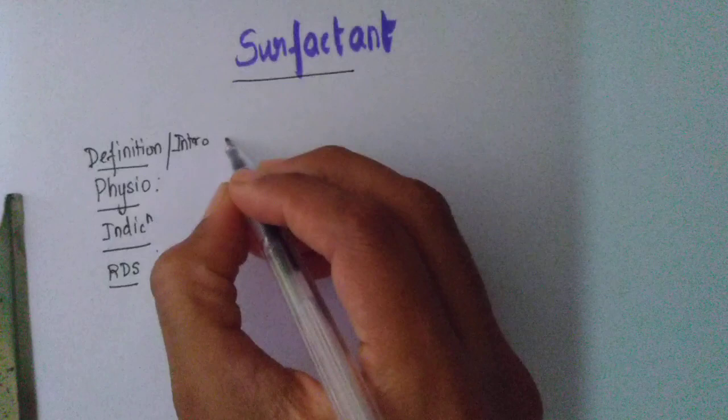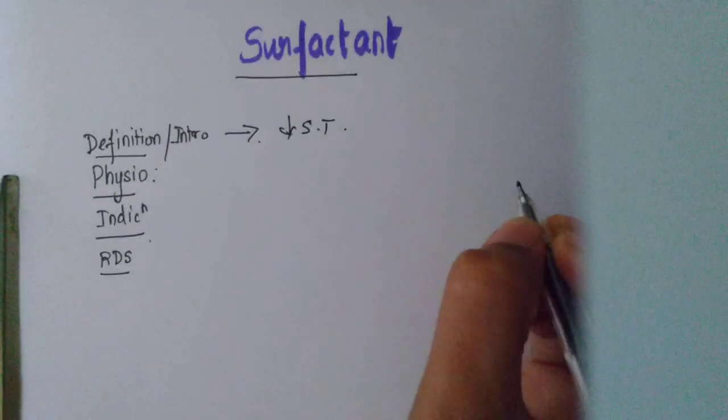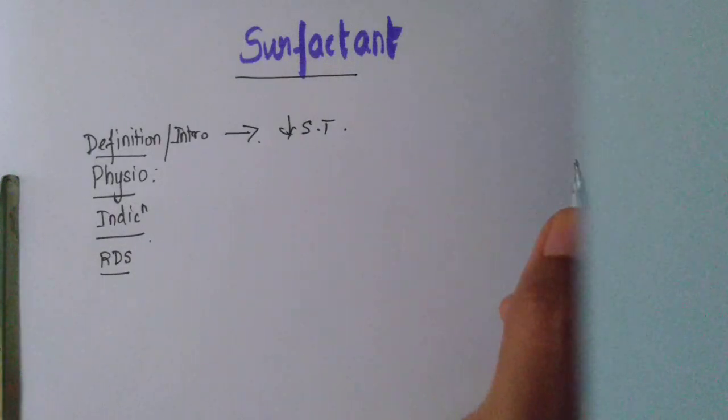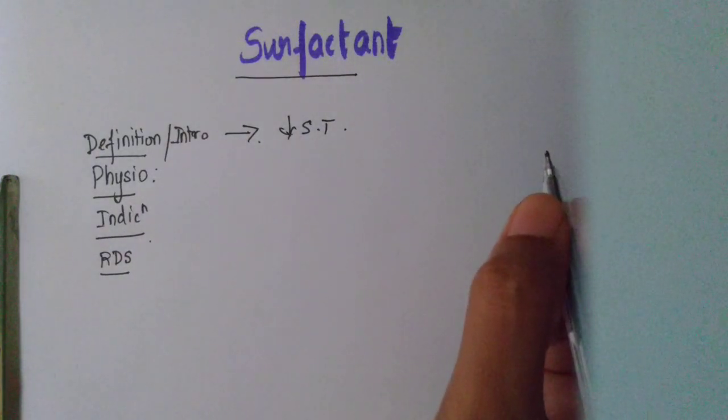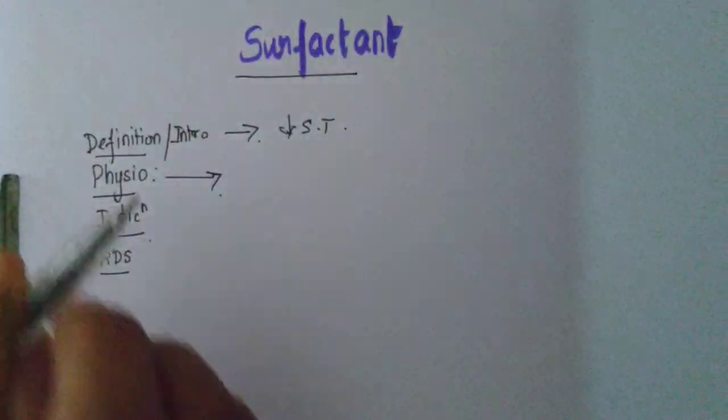So as far as definition or introduction is concerned, it is easy enough. Surfactant is a substance that decreases surface tension. So surfactant is naturally produced in our body. You don't have to do anything about it. What about the physiology? How is it produced, where it is produced?